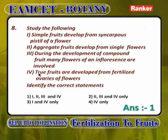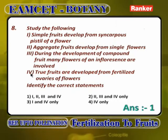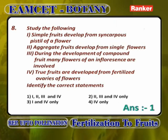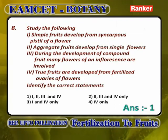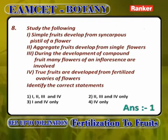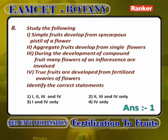Simple fruits develop from syncarpous pistillate flower is correct. Aggregate fruits develop from single flowers is correct. During the development of compound fruit, many flowers of an inflorescence are involved is correct. True fertilized ovaries of flowers is correct. So, answers 1, 2, 3, and 4 — all four are correct answers.